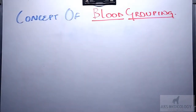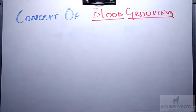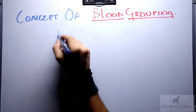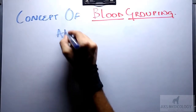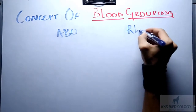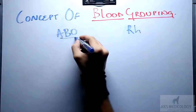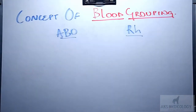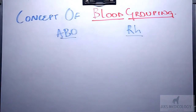Among more than 20 systems of blood grouping, the two most commonly used systems are ABO blood grouping and the RH blood grouping system. Both of these systems work on the basis of presence or absence of any antigen over the surface of RBCs.